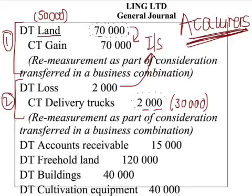We just need to revalue or re-measure them at fair value. I hope this clarifies why those assets have been re-measured in this question and where the requirement originates — AASB 3 states that any assets forming part of the consideration transferred must first be re-measured to fair value before the consideration transfer journal is passed. If you need any further information or clarity on this concept, please post a question and I'll be able to deal with it in more detail.